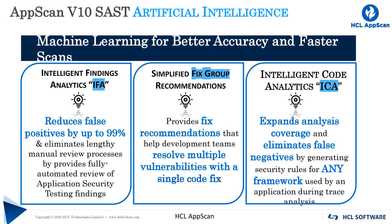With its cognitive IFA capabilities, AppScan helps reduce false positives by up to 98% and focuses findings on the ones that should be addressed first. This reduces the need for security experts to spend time reviewing findings or false positives before sending them to developers. The time from identification to remediation is improved, reducing the overall cost for fixing security vulnerabilities.